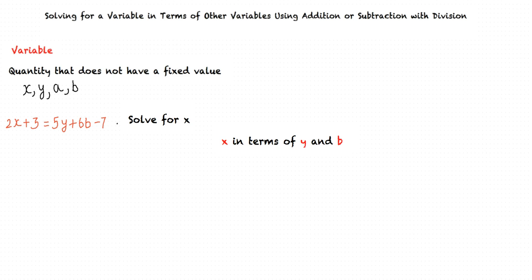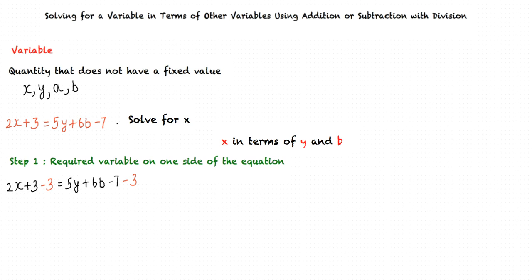How do we proceed with the problem? The first step is to have the variable which we are required to solve for on one side of the equation. Here, we are required to solve for x, so we subtract 3 from both sides of the equation to make sure we have x on one side of the equation.